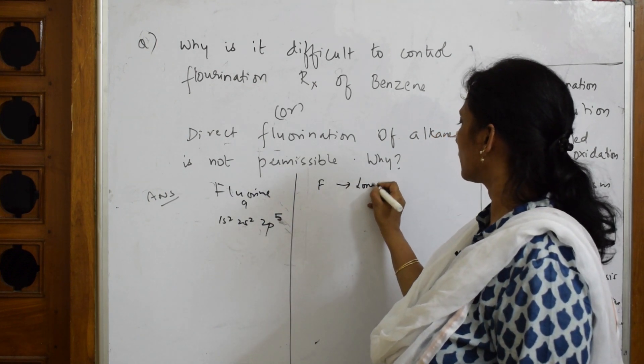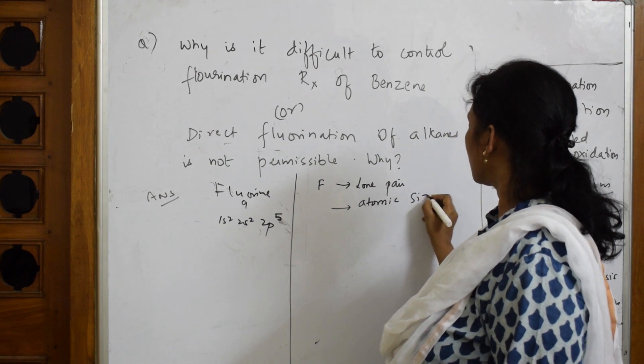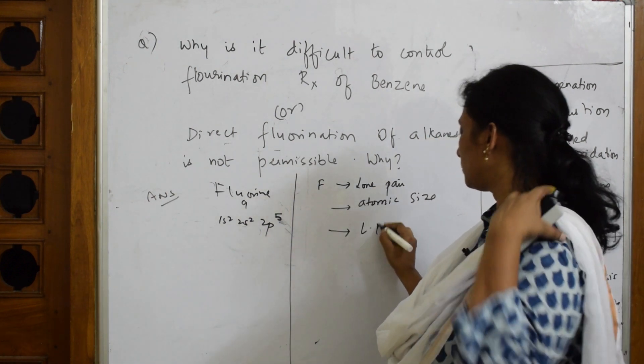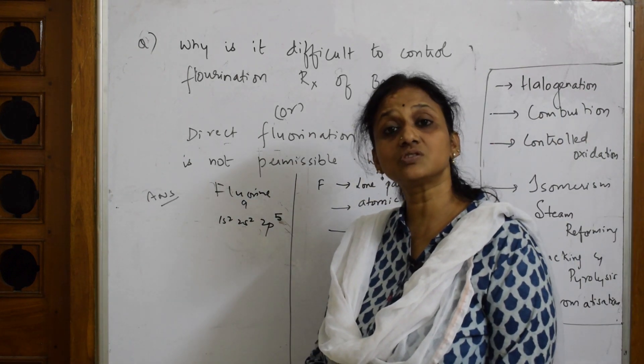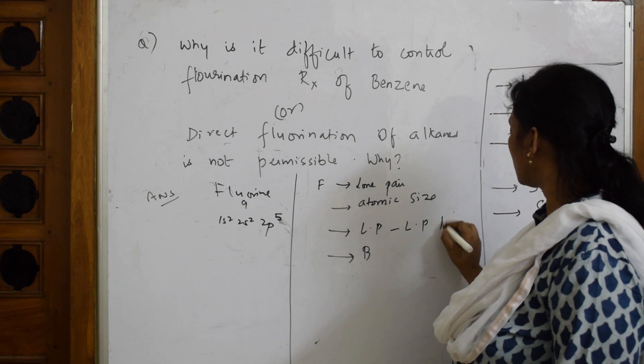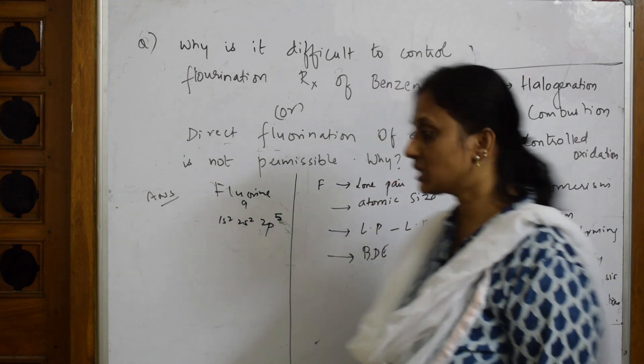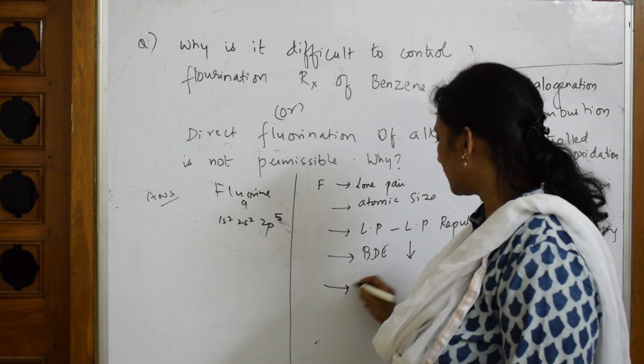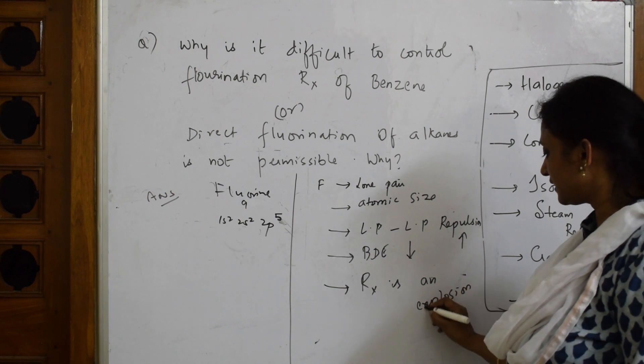What happens? First important thing: fluorine has a lone pair. Next important thing: the atomic size of fluorine is very, very small. When the atomic size is very small, the lone pair-lone pair repulsion will increase. When the lone pair-lone pair repulsion increases, what will happen to the bond dissociation enthalpy? Automatically the bond dissociation enthalpy of this will become less. When the bond dissociation enthalpy is less, what will happen to the reaction? It will be an explosive reaction.